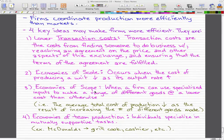Economies of scope. So this is when a firm can use specialized inputs to make a range of different goods at a lower cost than otherwise. So the average total cost of production decreases as the result of increasing the number of different goods made.